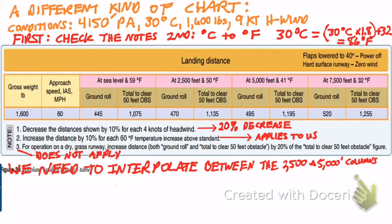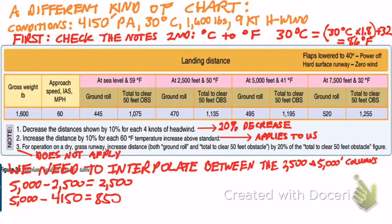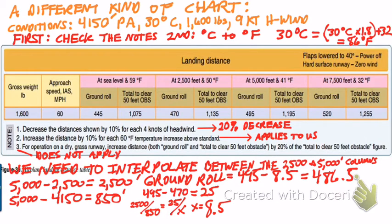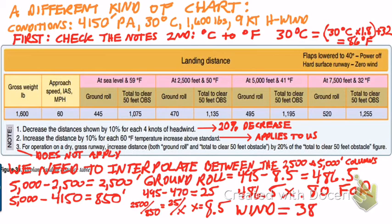We need to interpolate between the 2,500 and 5,000 foot columns since we're at 4,150-foot pressure altitude. 5,000 minus 2,500 equals 2,500, and 5,000 minus 4,150 equals 850. The ground roll difference between the two columns is 495 minus 470, which is 25 feet. We set up our proportion: 2,500 over 850 equals 25 over X. X equals 8.5. Then 495 minus 8.5 equals 486.5 feet. Applying the 20% headwind reduction: 486.5 times 0.8 yields a ground roll of 389.2 feet.